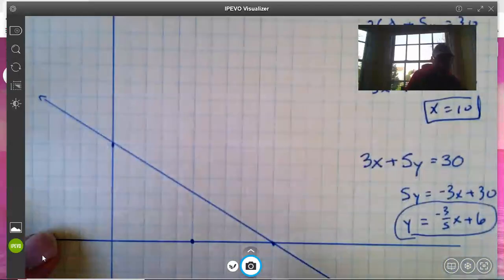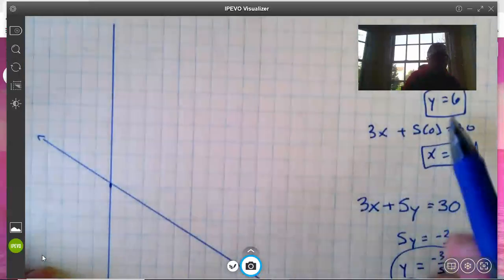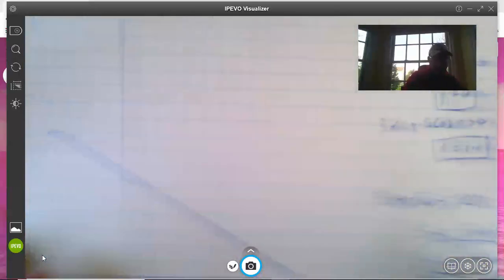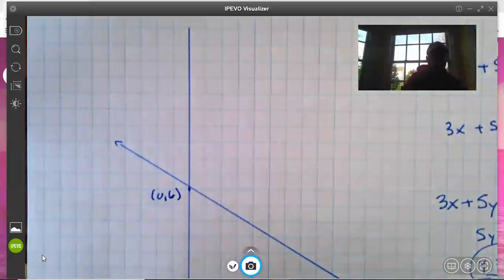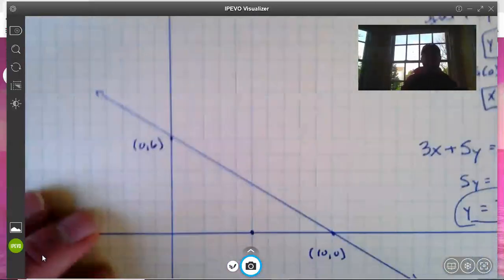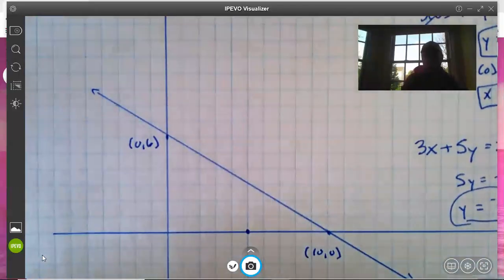So when y is 0, x is 10, and therefore we get the point (10, 0). Or when x is 0, y is 6, and that gives us the point (0, 6). We can plot those two points and then use those to draw the line.